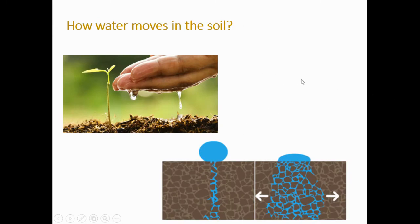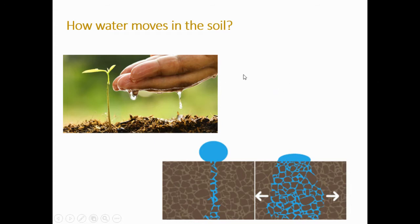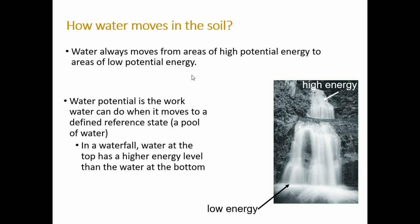Now let's look at how water moves in soil. Imagine you put a drop of water on the soil. Once that drop falls into the soil, some water will go down and some will spread horizontally on the surface. If the texture is coarse with larger pores, most water goes downward. If the texture is fine, it takes longer to infiltrate but it can spread horizontally a lot. To understand why this happens, we need to understand the concept of energy in the soil.